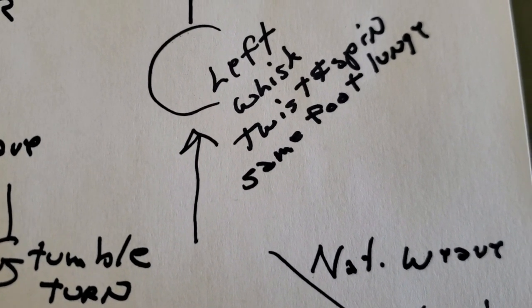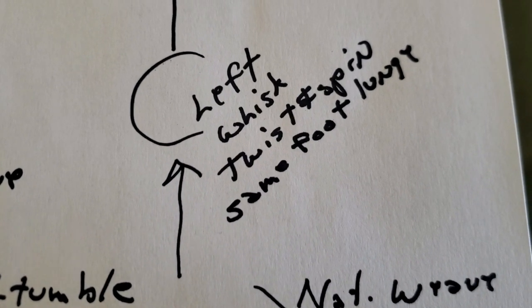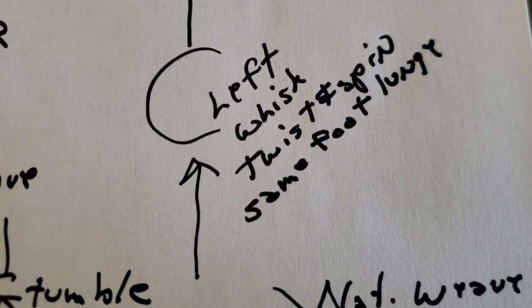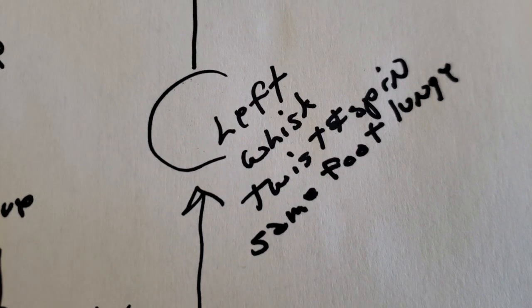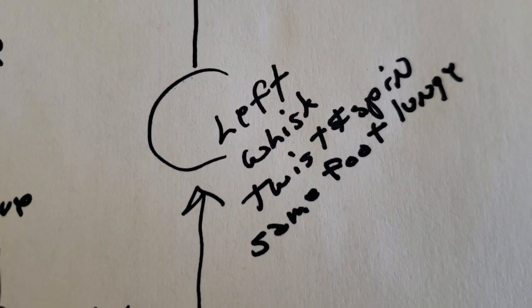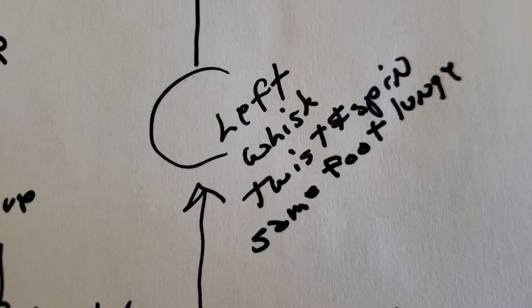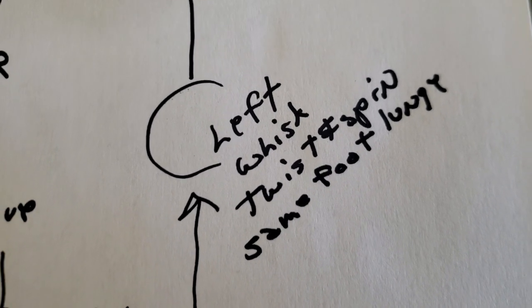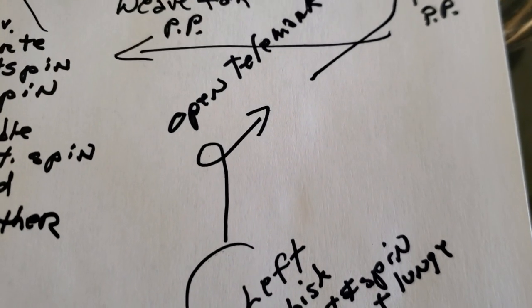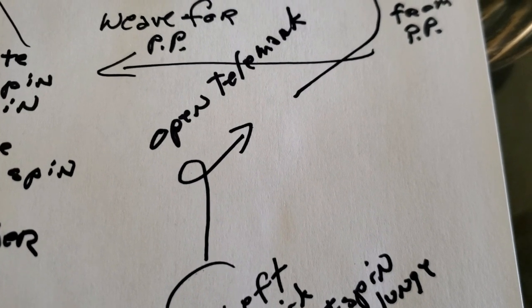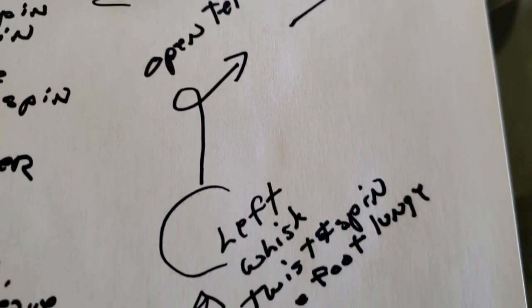This is the grouping that you were watching Mirko dance: the left whisk, a little bit of a twist and a spin to a same foot lunge. Now you're going to slip the lady in using the method that we talked about last week, and then do the open telemark.